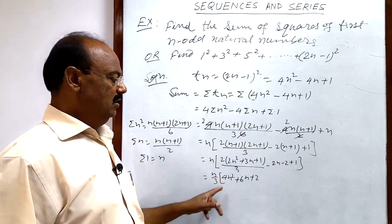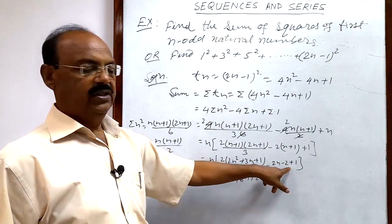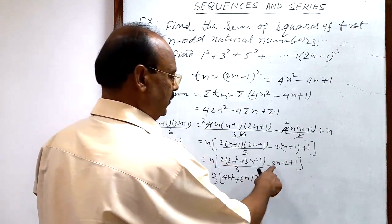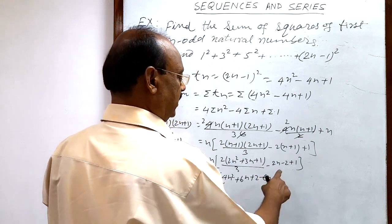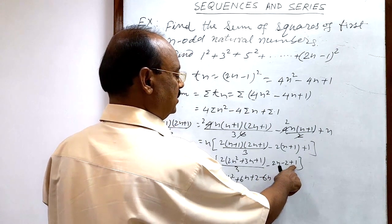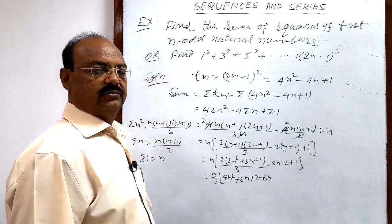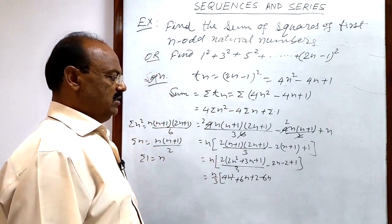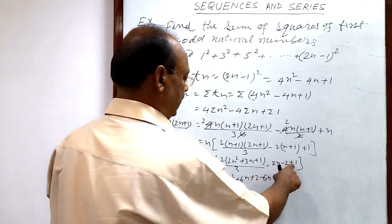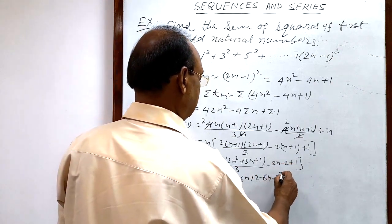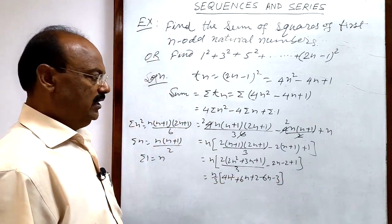3 is LCM here. So this 3 will be multiplied with these terms. 3 × -2n is -6n and here -2 + 1 is -1, isn't it? Minus of 1. So 3 will be multiplied with -1. So this is -3.